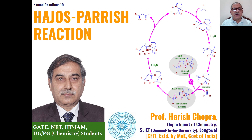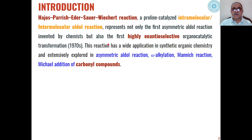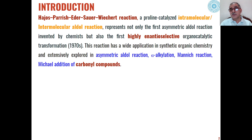Dear students, continuing with our lecture series on named reactions, this is our 19th lecture. In this lecture, we will explain how the Hajos-Parrish reaction is involved in the formation of a carbon-carbon bond, and how asymmetric compounds can be synthesized using the Hajos-Parrish reaction, which is also called the Hajos-Parrish-Eder-Sauer-Wiechert reaction, because at different stages different types of substrates were used for the synthesis of new organic compounds having a new carbon-carbon bond.